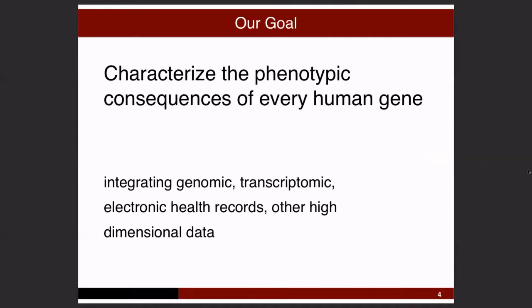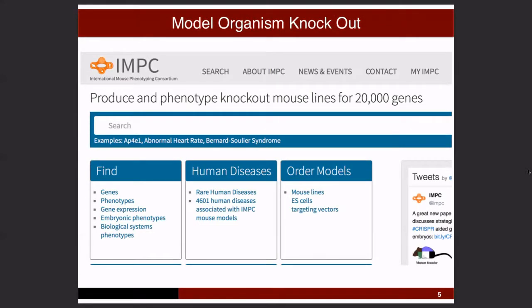So we can propose a very ambitious goal: to characterize the phenotypic consequences of every human gene, by integrating genomic, transcriptomic, and electronic health record data from biobanks such as UK Biobank. Typically, to find a gene's function, you'd pick a model organism like a mouse, knock out the gene, and observe the phenotypes. That's exactly what the International Mouse Phenotyping Consortium is doing — producing and phenotyping knockout mouse lines for 20,000 genes.